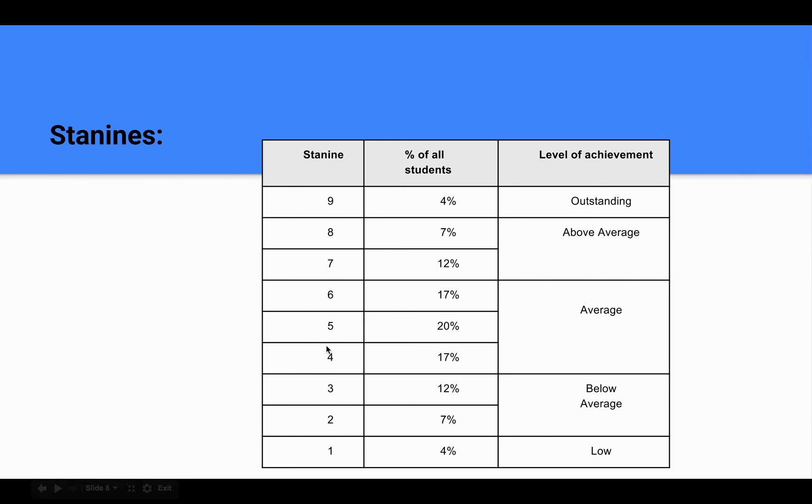Students whose test scores are above the average scores for that year group are given a STA9 of between 7 and 9. And those who are below the average scores are given a STA9 of 1 to 3.